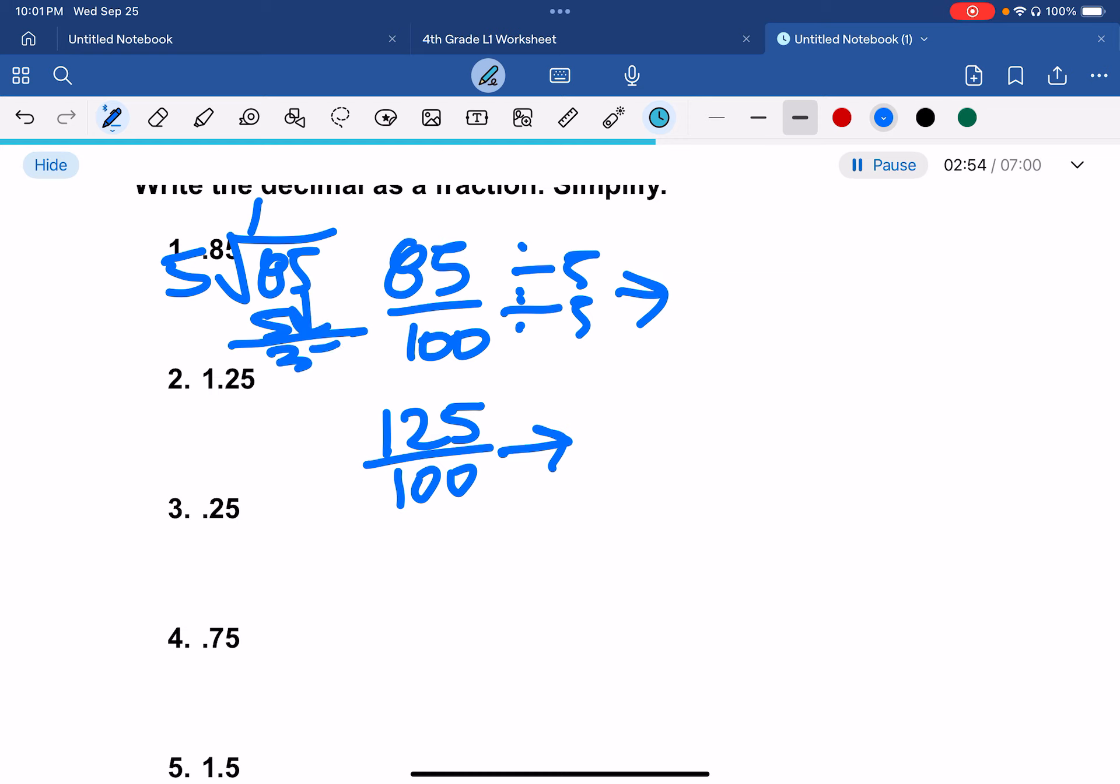So we would get 85 divided by 5, which is 1, 5, 3, 5, which would be 7. So it would be 17 over 50.